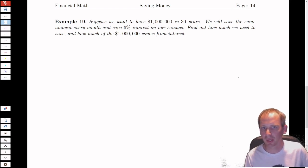Let's look at another example of saving money. In this example, it says that we want to have a million dollars in 30 years.